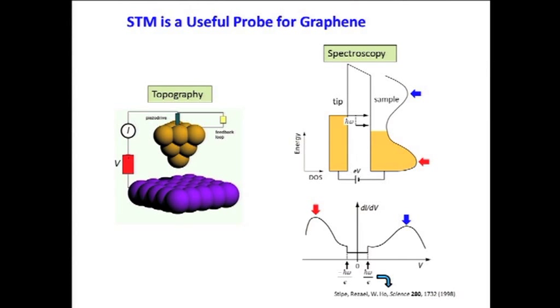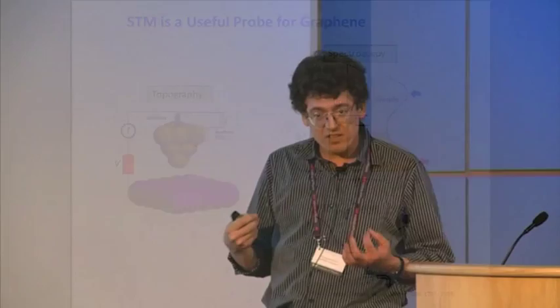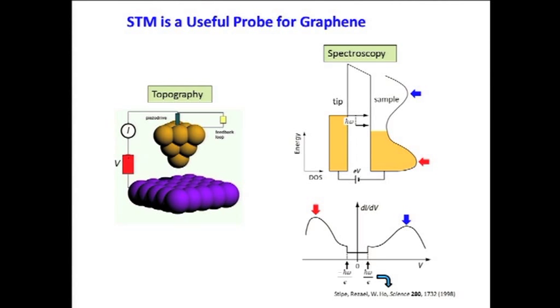The STM also allows us to measure inelastic excitations of small structures. If we put a bias on the STM tip big enough so that tunneling electrons have enough energy to create an inelastic excitation, that gives those electrons an additional channel — an inelastic channel — say by making a phonon. That then gives us a jump, a step in the dI/dV at the threshold energy for creating those excitations.